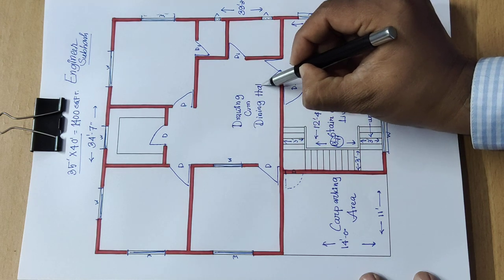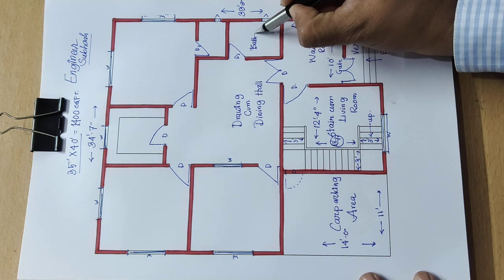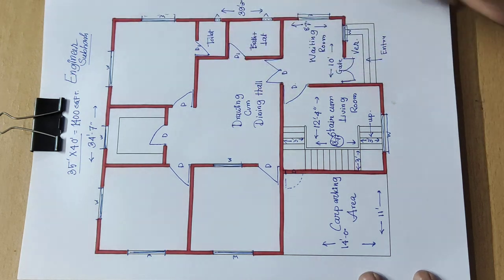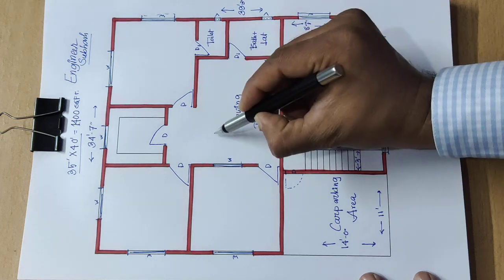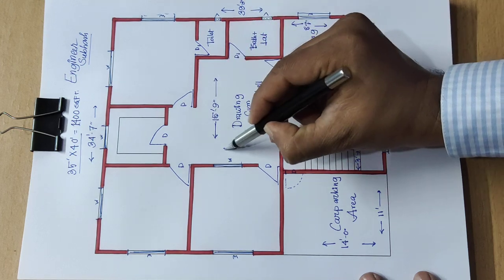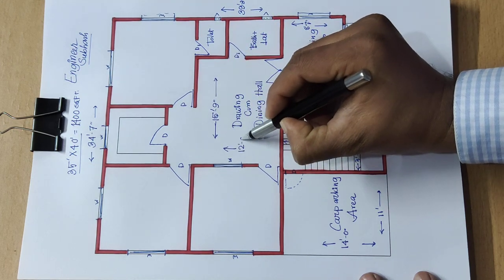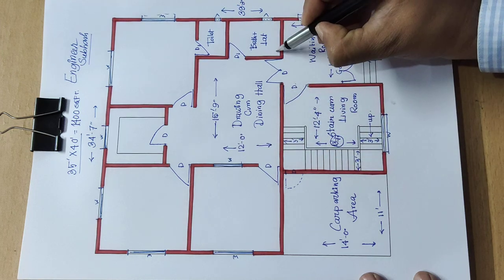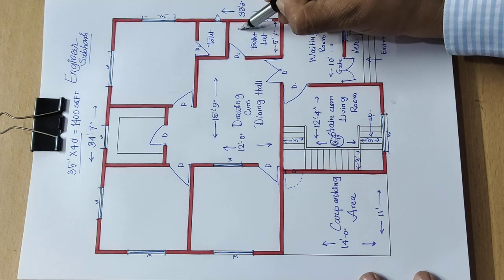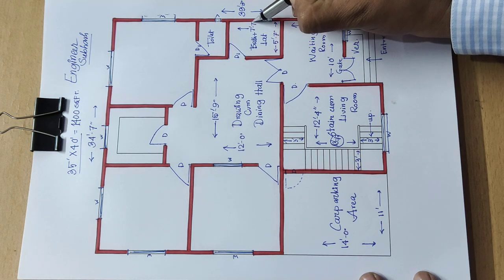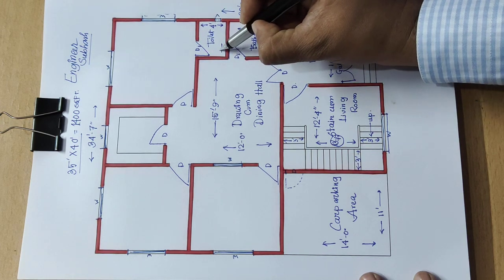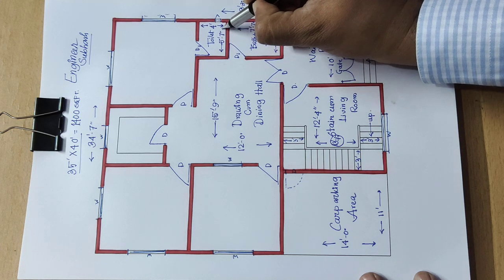Here you have common bath plus latrine, attached toilet room. This measurement is total 15 feet 9 inch and 12 feet 0 inch. Bath is 5 feet 7 inch, here is 7 feet 7 inch, here is 4 feet and here 5 feet 7 inch.